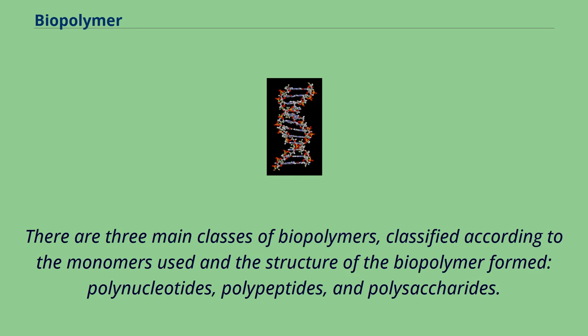There are three main classes of biopolymers, classified according to the monomers used in the structure of the biopolymer formed: polynucleotides, polypeptides, and polysaccharides.